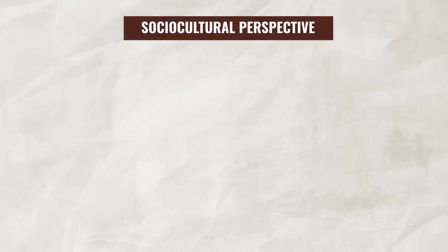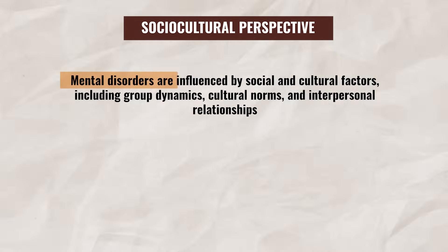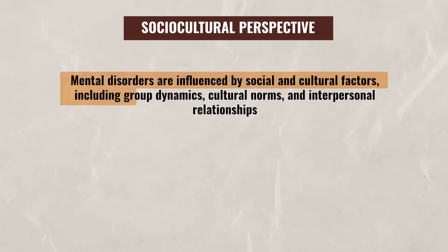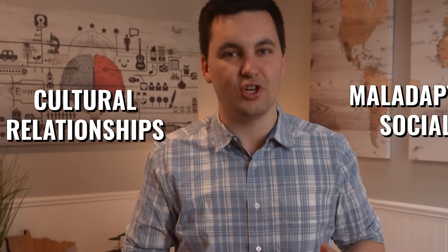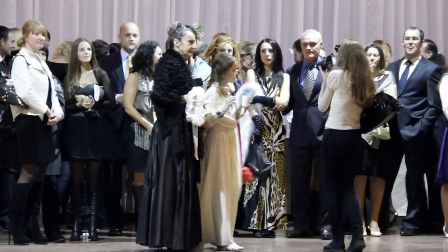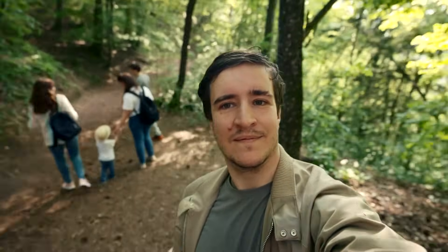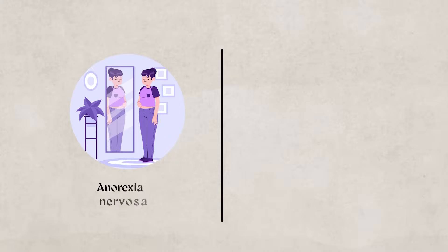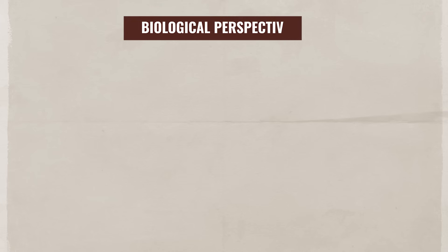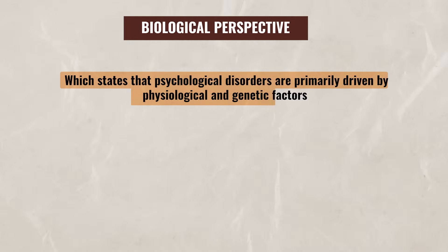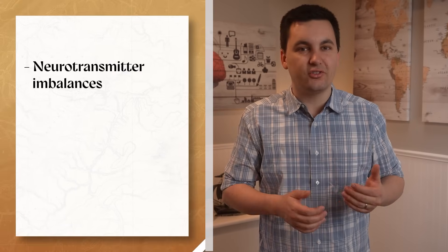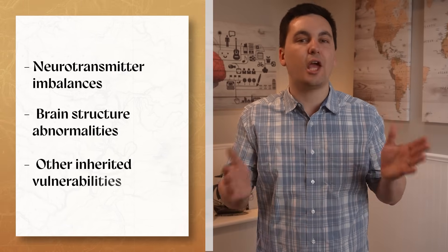The sociocultural perspective looks at how mental disorders are influenced not by genetics, but by social and cultural factors, including group dynamics, cultural norms, and interpersonal relationships. This perspective focuses on maladaptive social and cultural relationships, examining the different social norms and societal pressures that an individual is exposed to. For instance, cultures that put a major focus on being thin may contribute to disorders such as anorexia nervosa or bulimia nervosa. Lastly, there is the biological perspective, which states that psychological disorders are primarily driven by physiological and genetic factors — for instance, neurotransmitter imbalances, brain structure abnormalities, or other inherited vulnerabilities.